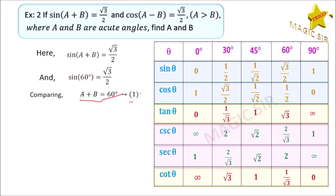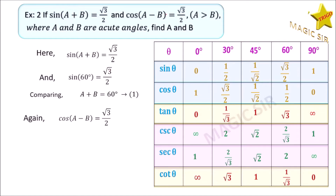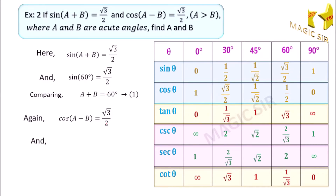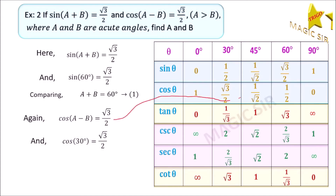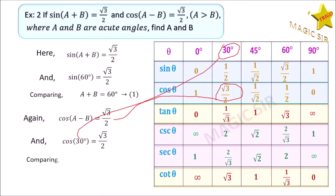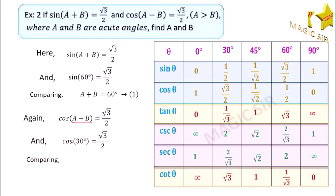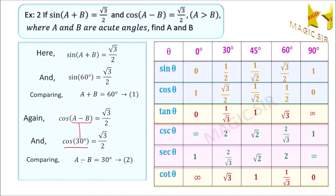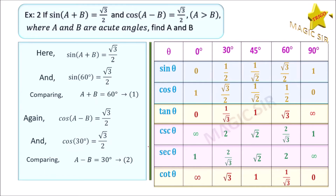Again, we have given that cos(A−B) is equal to √3/2. So now look at the Trigo tab. In the third row, cos theta is equal to √3/2, and in the first row, theta is equal to 30 degrees. So we write cos 30 degrees equals √3/2. Comparing, we get cos(A−B) equals cos 30 degrees, therefore A minus B is equal to 30 degrees. This is our second equation.